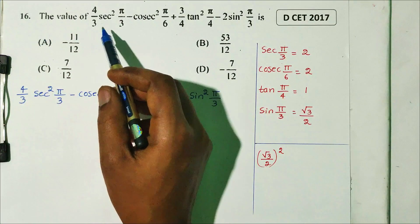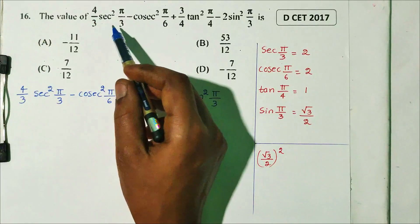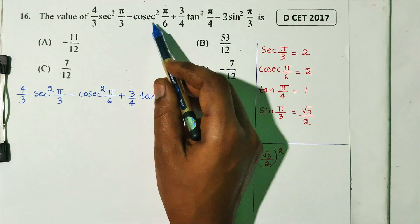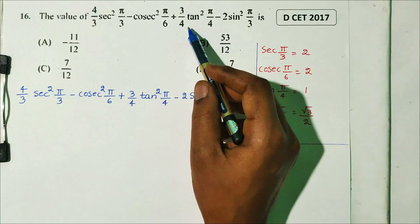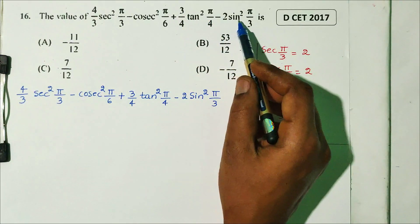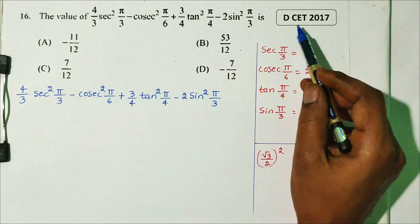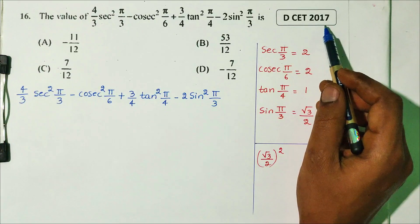Question number 16. The value of (4/3)sec²(π/3) minus cosec²(π/6) plus (3/4)tan²(π/4) minus 2sin²(π/3). This question is from DCT 2017.